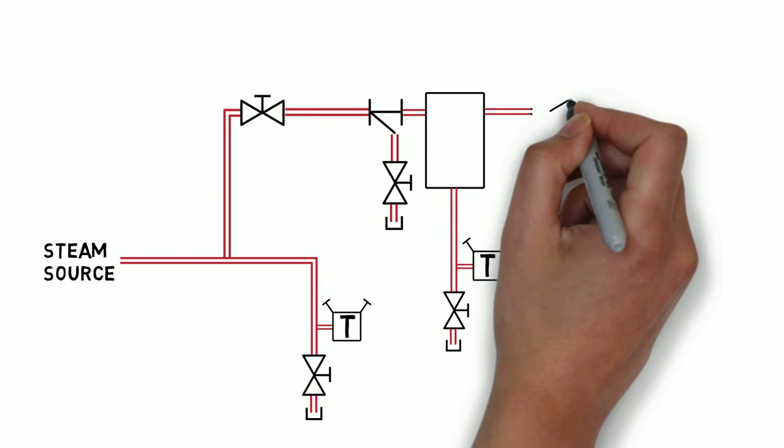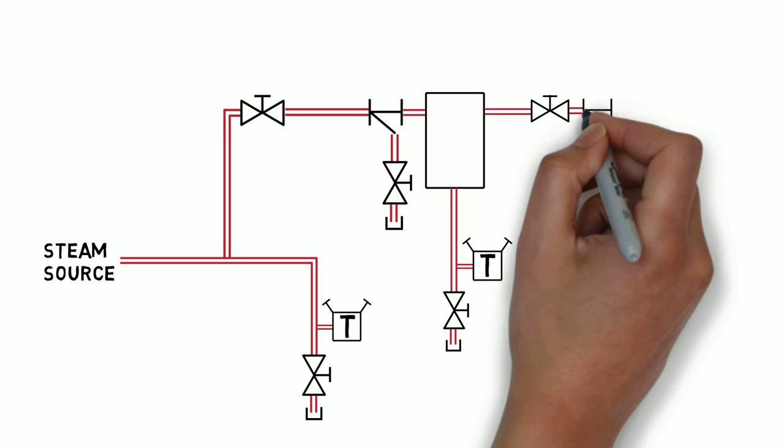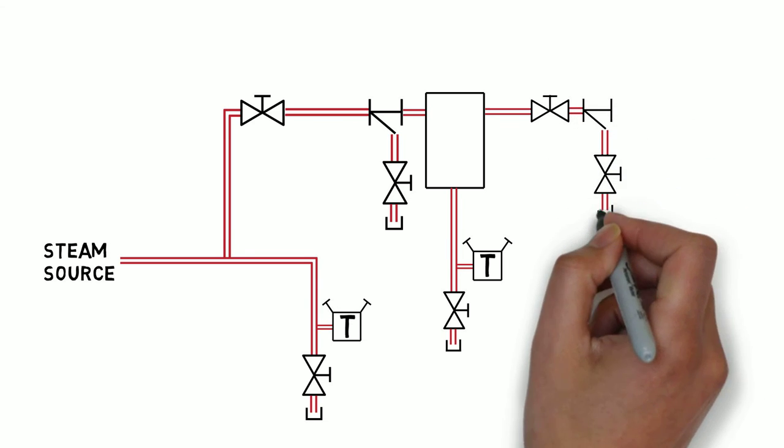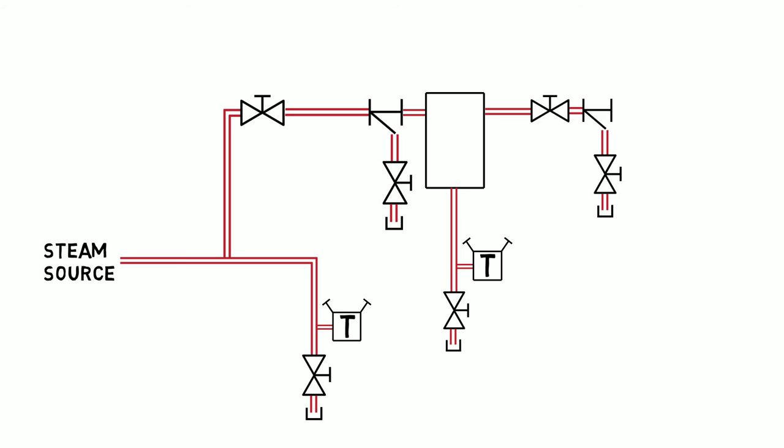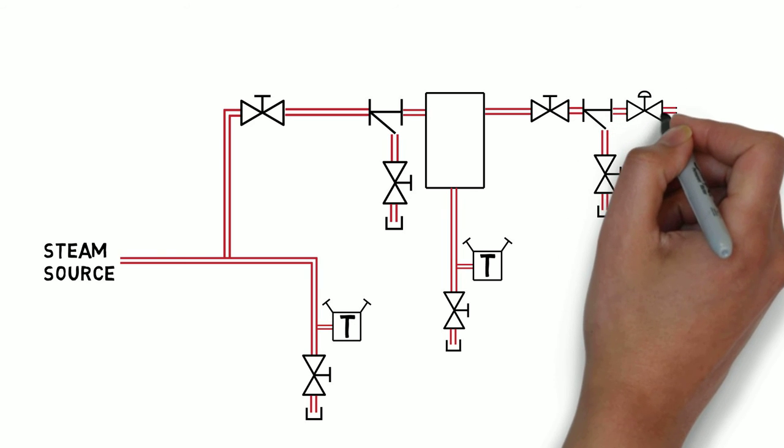From the steam separator, steam goes through a process isolation valve and is piped to a strainer with a blowdown valve. It next travels through a control valve and another isolation valve.